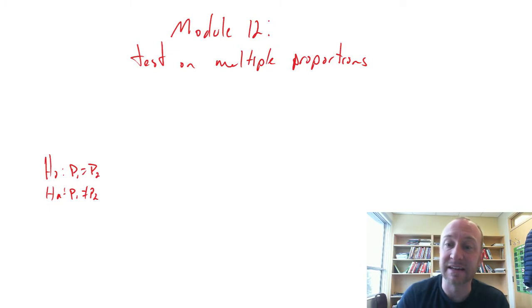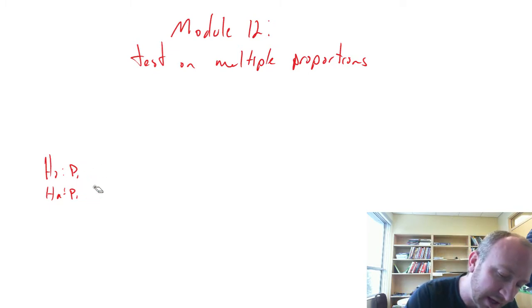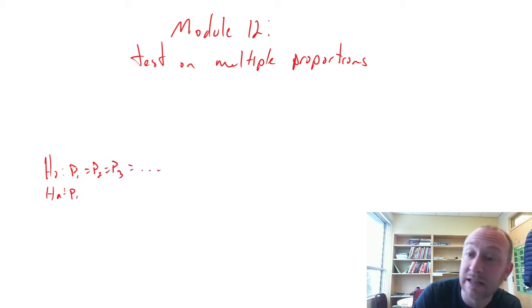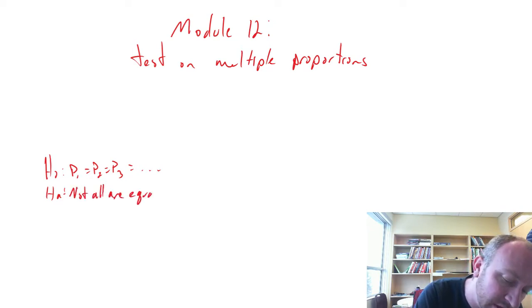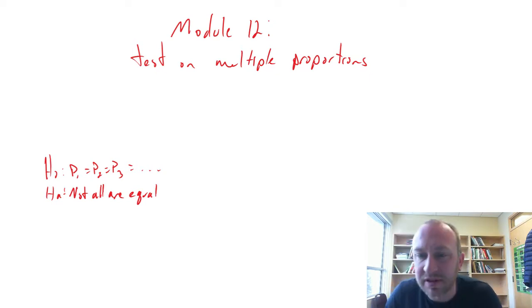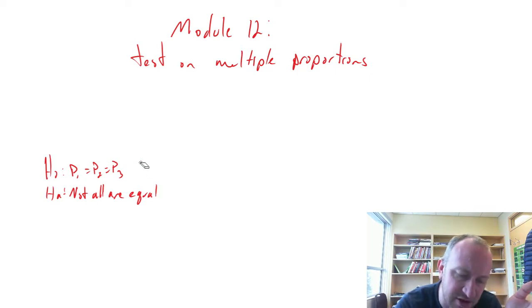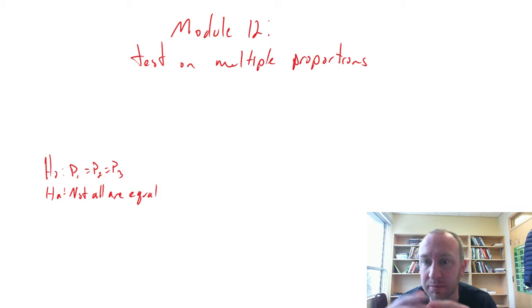So now we're going to take that a step further and consider P1 equal to P2 equal to P3 equal to as many as we want, and the alternative not all are equal. So we'll go through a couple of examples, testing multiple proportions. We'll keep the examples fairly short, so we'll probably limit ourselves to just three different populations and test for equality across those three proportions.